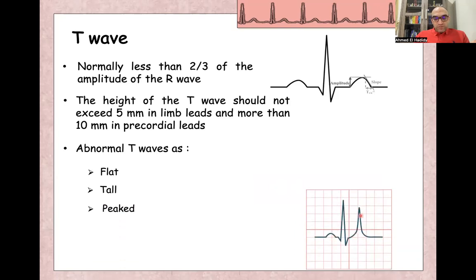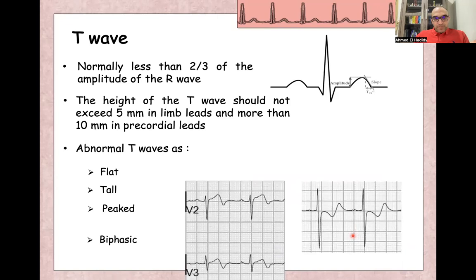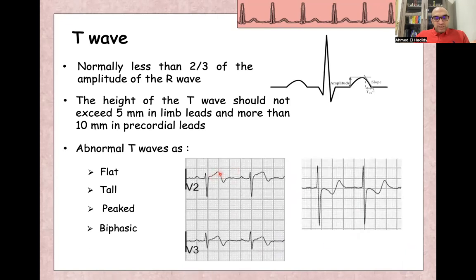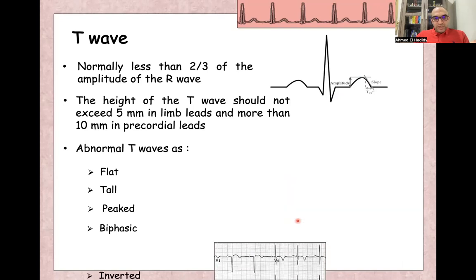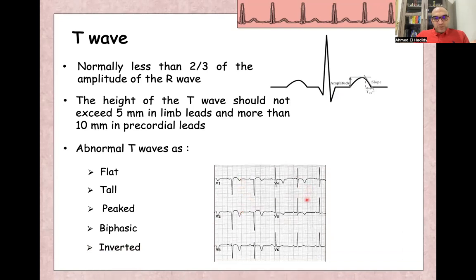Peaked T wave, what we call peaked or tented T wave is abnormal. Biphasic T wave, like this example, like in V2 and V3, this is biphasic T wave. Either first deflection is positive and second one is negative, or first is negative and second one is positive. Both are abnormal and also inverted T waves is also abnormal T waves.